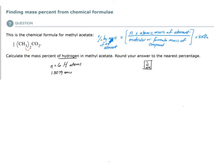We also need the molecular or formula mass of the compound. In this case we need the molecular mass because this is a molecular compound, not an ionic compound. We use the term formula mass for ionic compounds. To find the molecular mass, we have to add up all the masses of each individual atom present in this molecule.